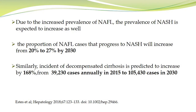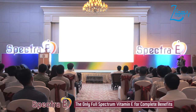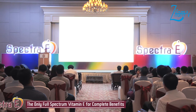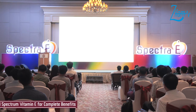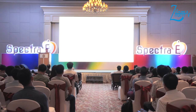Due to the increase in NAFLD prevalence, the presence of NASH has also increased — rising from 20 to 27 percent by the year 2013. Similarly, decompensated cirrhosis cases are projected to increase from approximately 39,230 cases annually in 2015 to over 105,430 cases in 2030. The prevalence of NAFLD is also a very high leading indication for liver transplantation over the next several decades, and the corresponding burden on cirrhosis and liver transplantation is expected to increase by 59 percent.